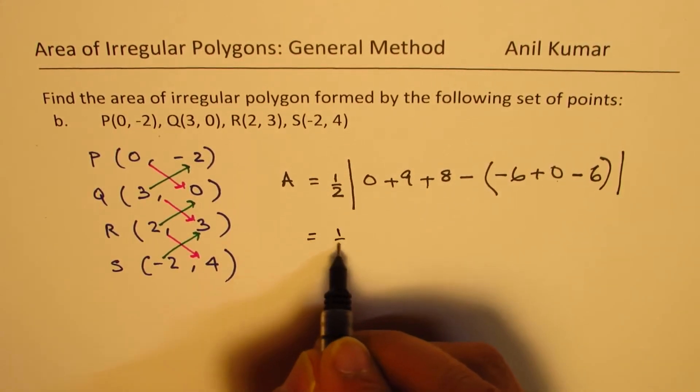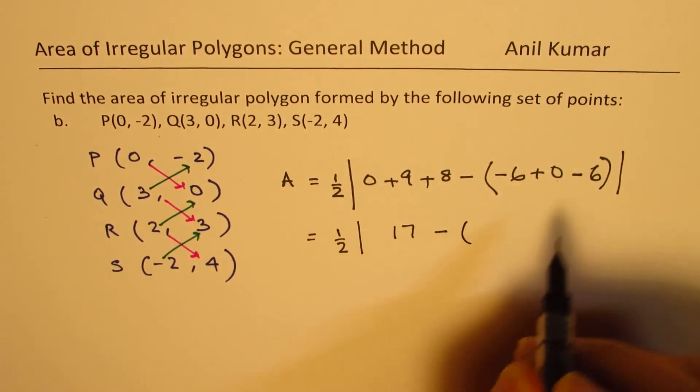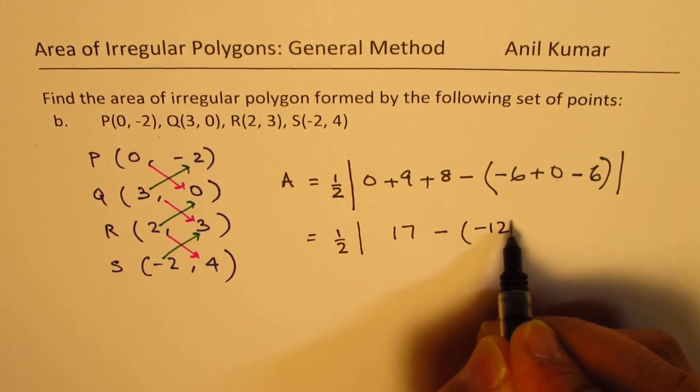Absolute value. We get the area as half of absolute value of 9 plus 8, 17, minus, this is minus 12.